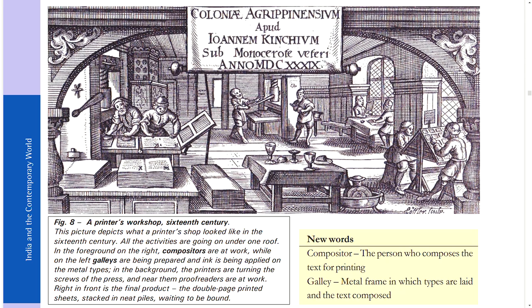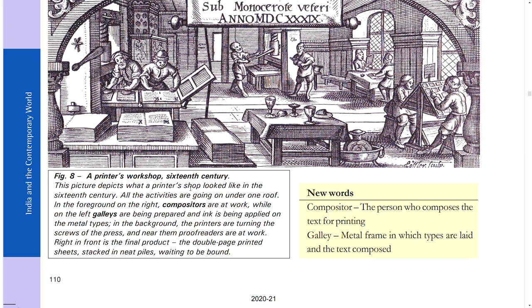A 16th-century printer's shop had all activities going on under one roof. In the foreground on the right, compositors were at work; on the left, galleys were being prepared and ink was applied on the metal types. In the background, printers were turning the screws of the press and near them proofreaders were at work. Right in front was the final product — double-page printed sheets stacked in neat piles, waiting to be bound. A compositor is the person who composes the text for printing; a galley is the metal frame in which types are laid and the text composed.